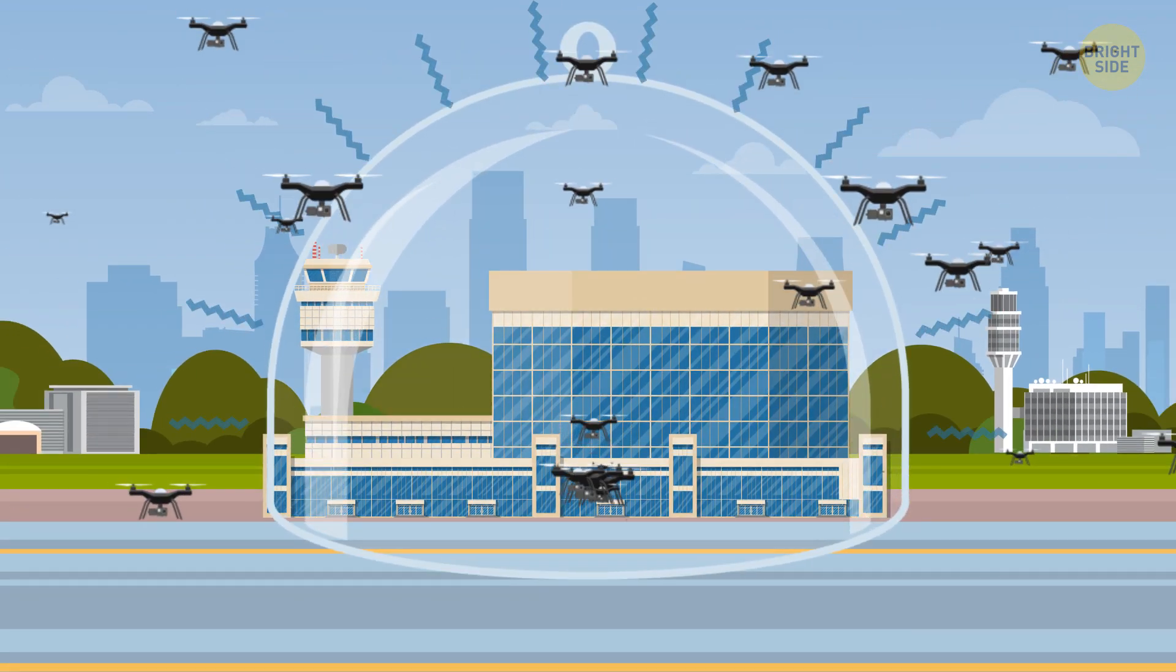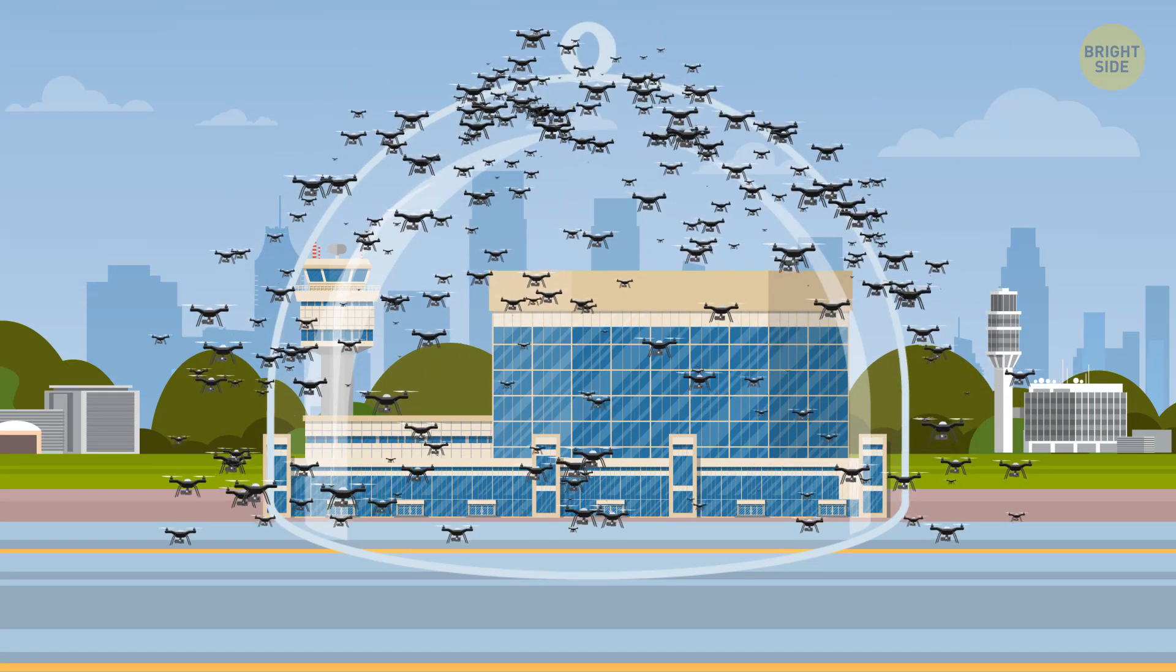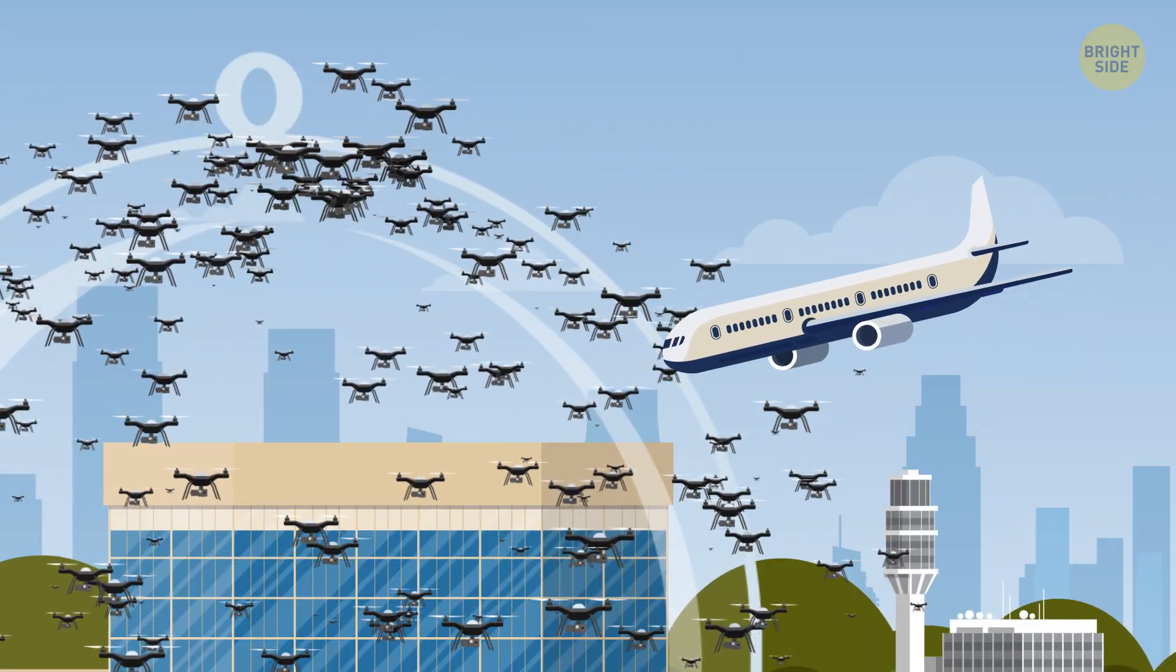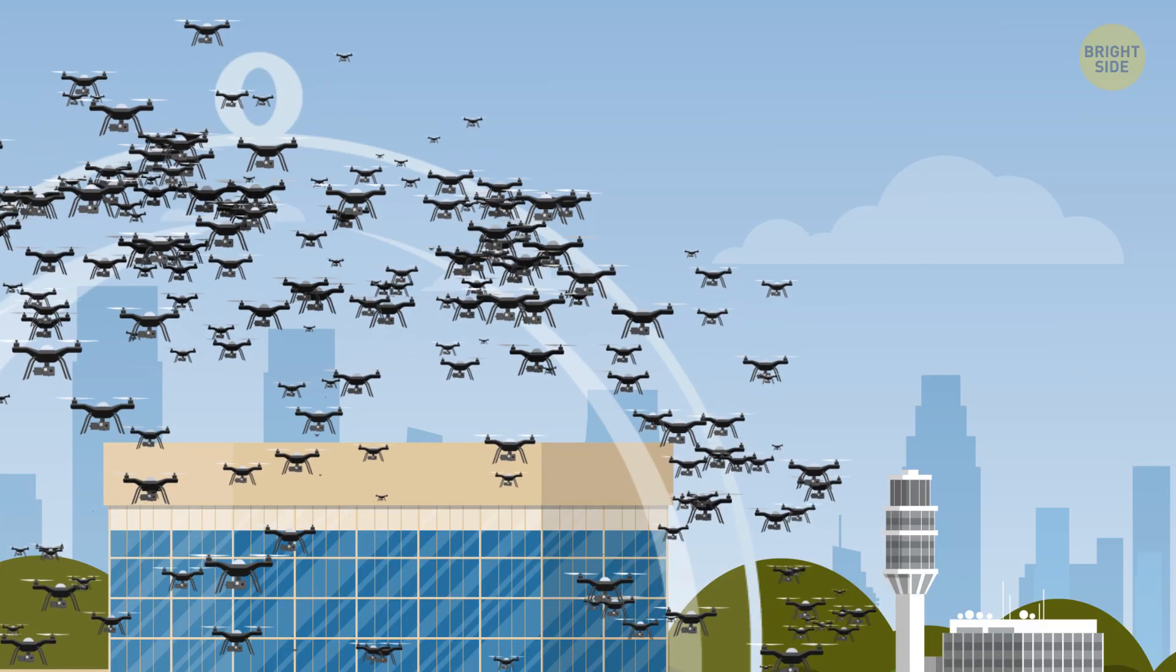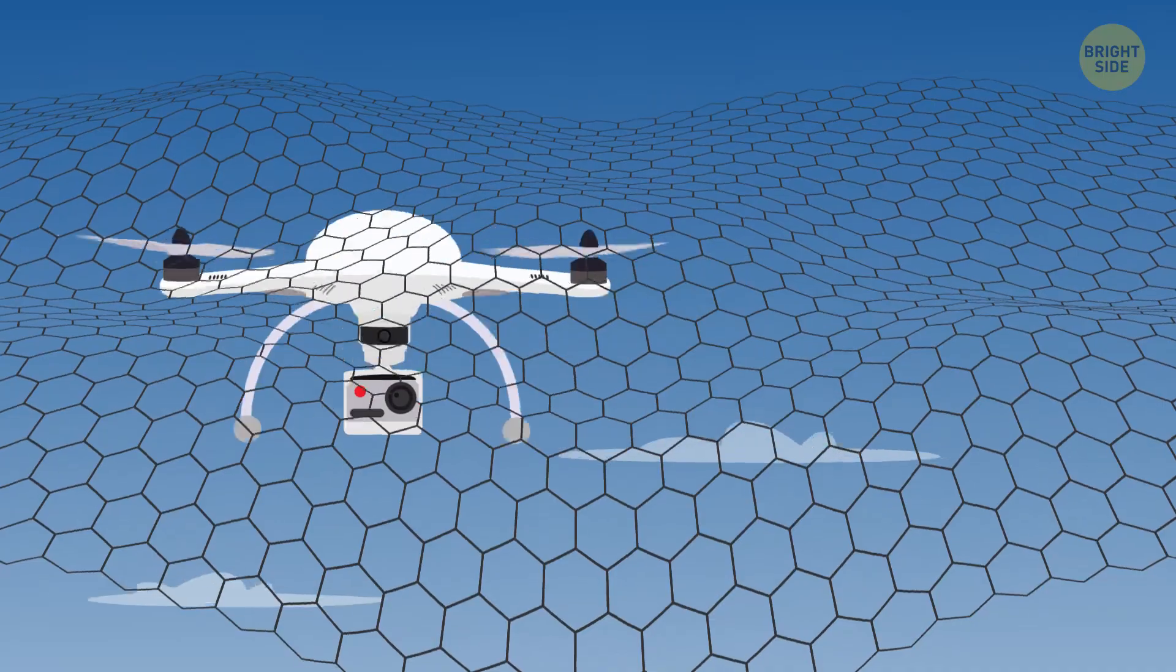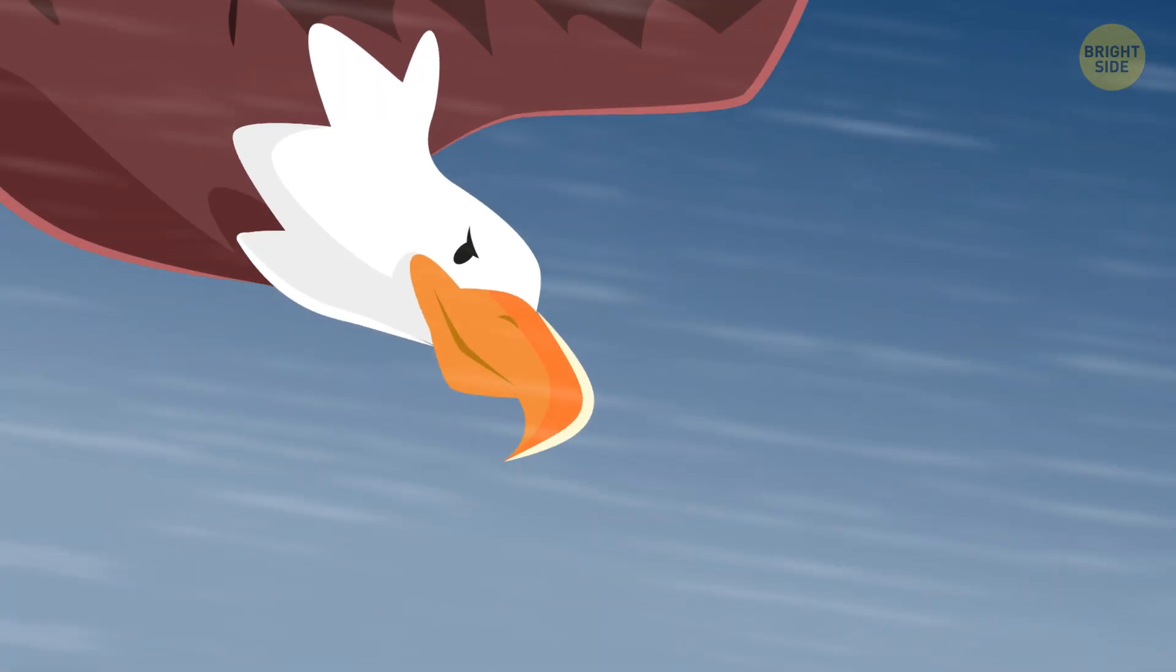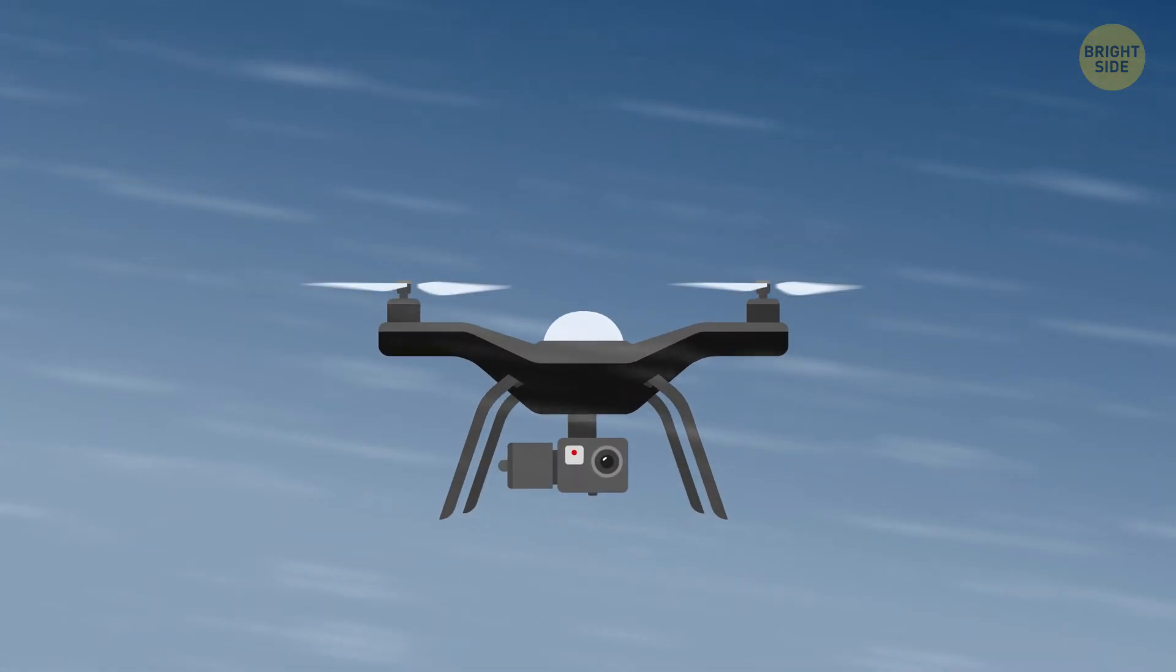Theoretically, airports could apply a special signal-jamming system to confuse drones and make them avoid approaching the prohibited territory. But it would be too risky to do close to airports, since it could disrupt vital air communications. Authorities have tried other methods, such as throwing nets to bring rogue drones down, or even using specially trained eagles to tackle the machines. But on the whole, the problem remains unsolved.